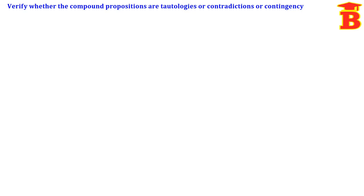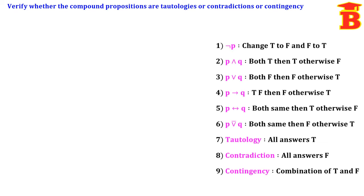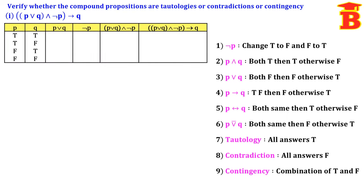Next problem: verify whether the compound propositions are tautologies or contradictions or contingency. We have to draw the truth table and based on the final answer determine which category it falls into.